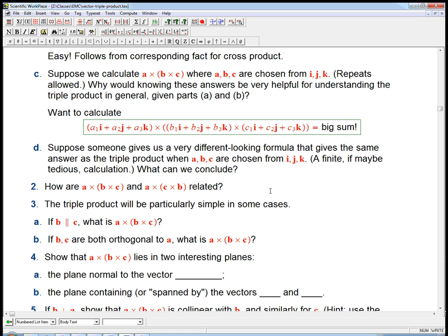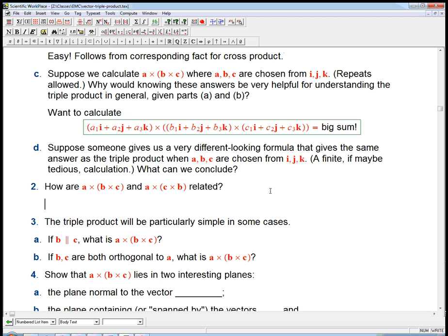So that's what trilinearity buys us, is the ability to just check it on a very small finite number of cases. Let's look at some other properties. Other pretty easy ones. How are a cross b cross c and a cross c cross b related? Think about it for a sec. Of course, they are negatives of each other. Just because of the anti-symmetry of that cross product inside. And then the minus sign just flies out. What does that tell you? It tells you, if you understand i cross, say, j cross i, you understand i cross i cross j. So that already, in terms of this kind of strategy in d, that already reduces the workload.